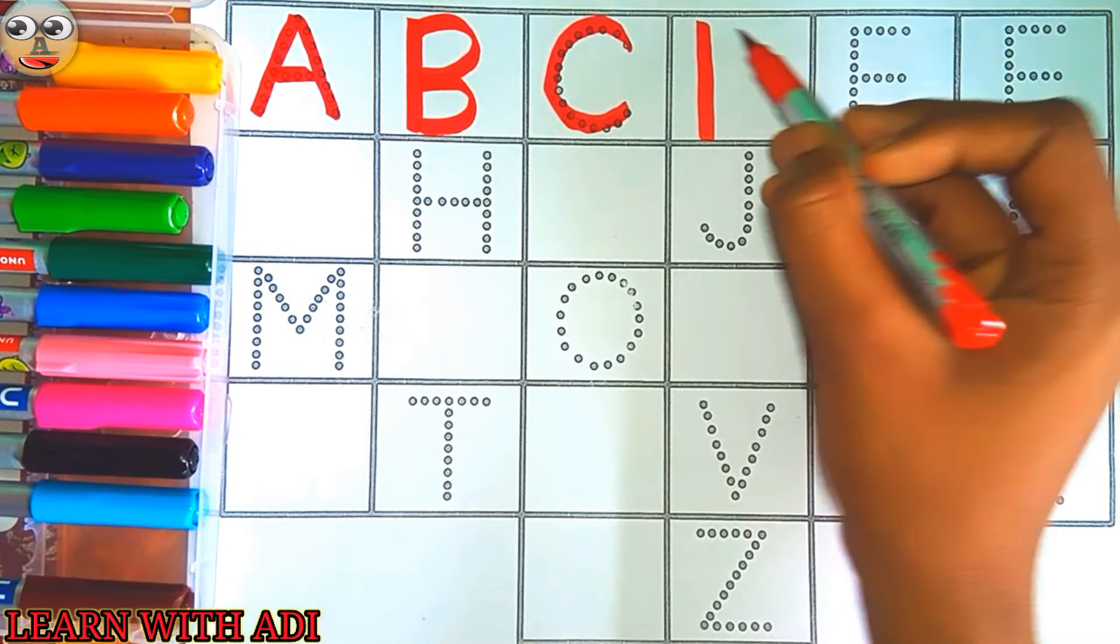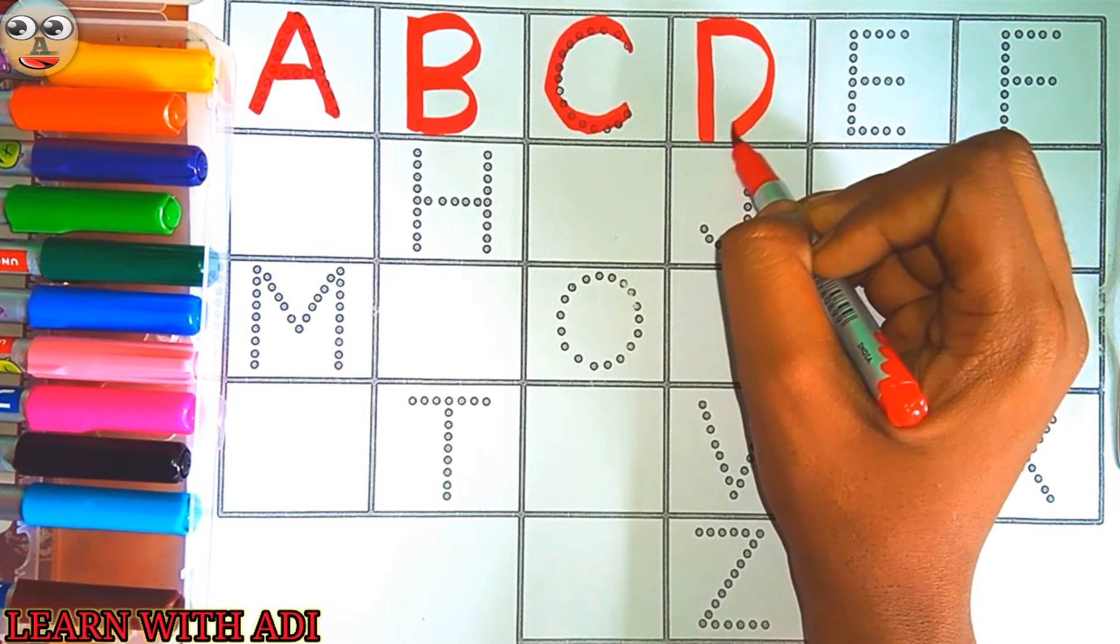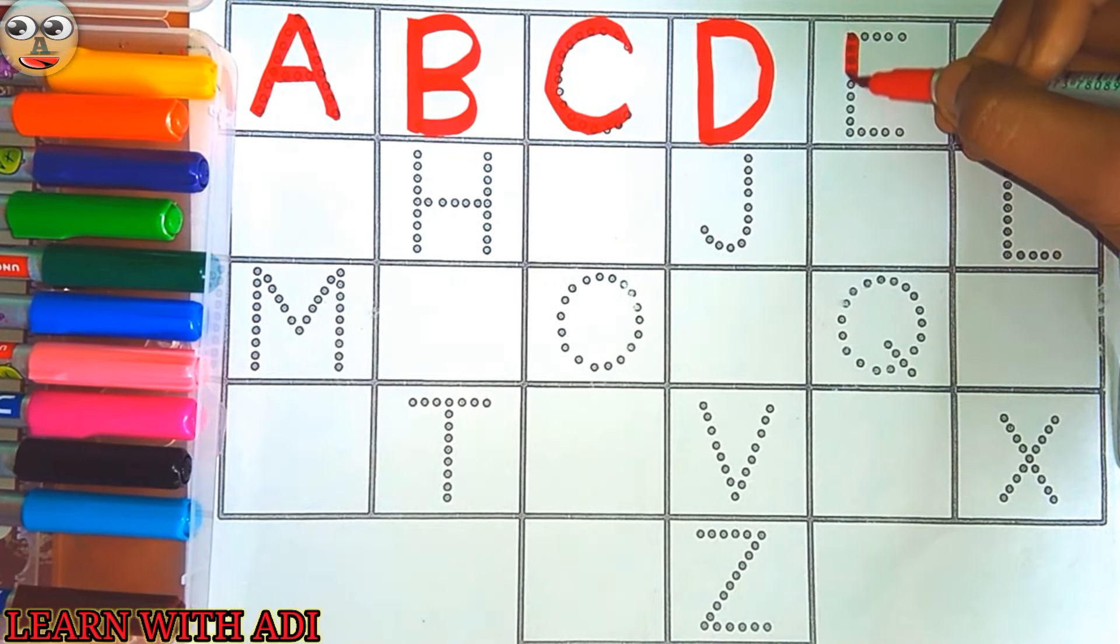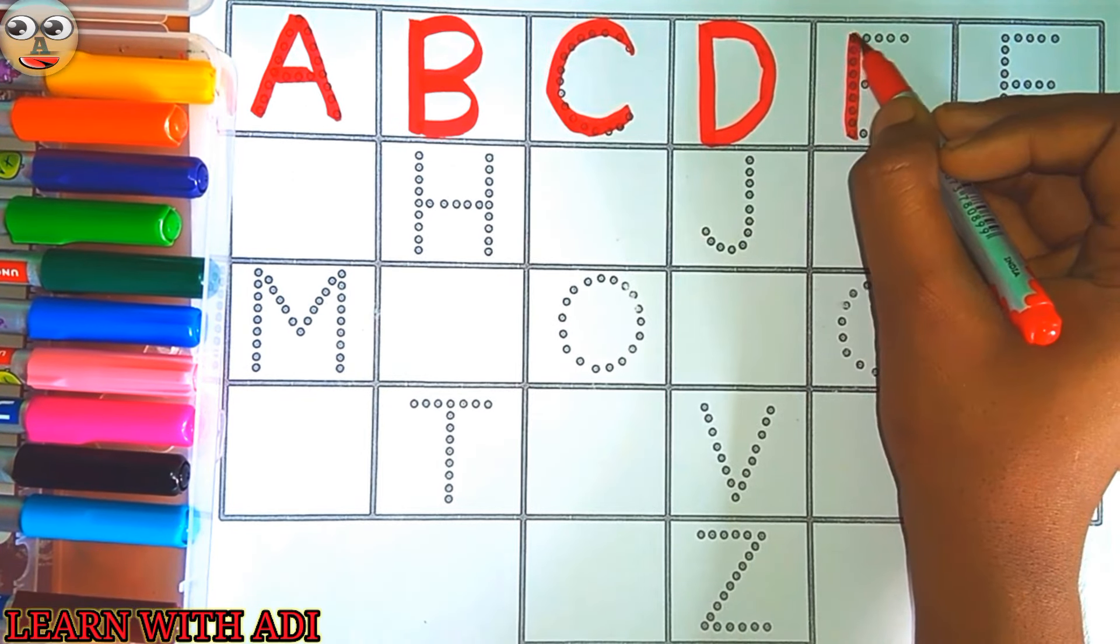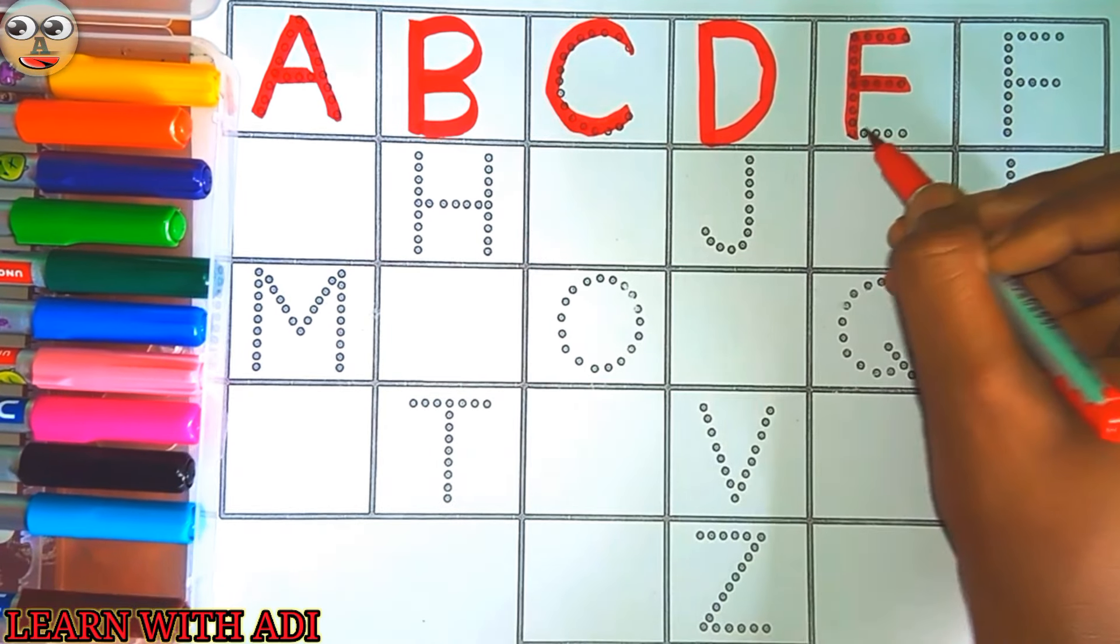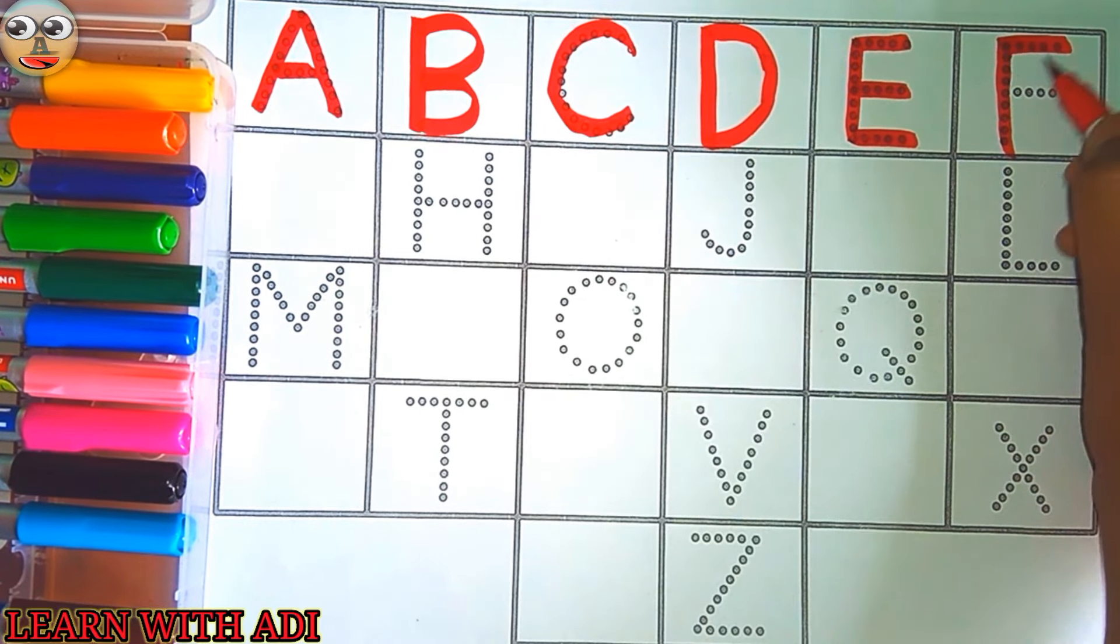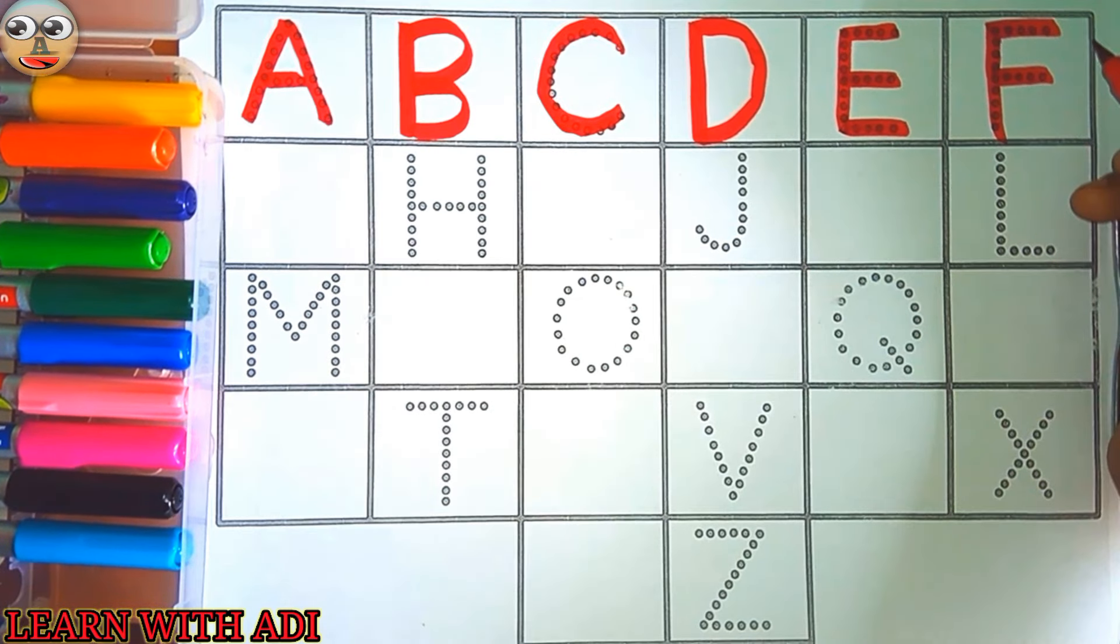C for cat, D for dog, D for doll, E for egg, E for elephant, F for fish, F for frog.